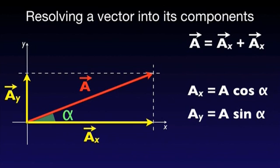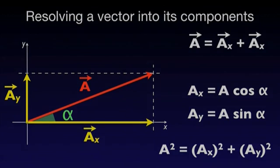Another useful relationship is given by Pythagoras theorem. A squared equals AX squared plus AY squared.